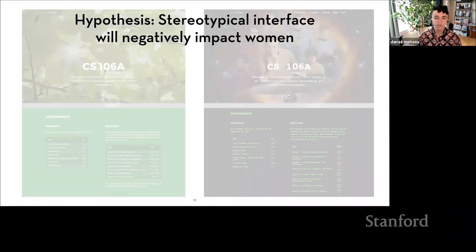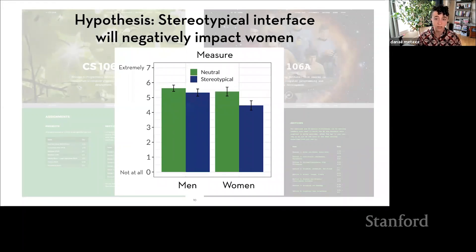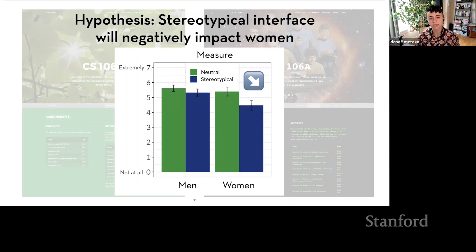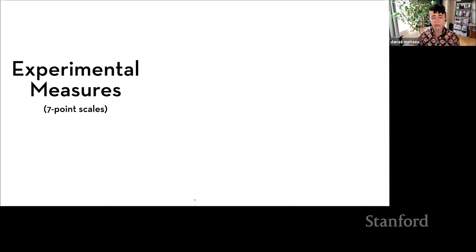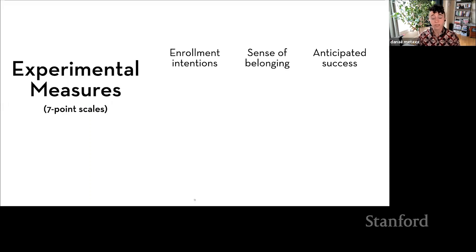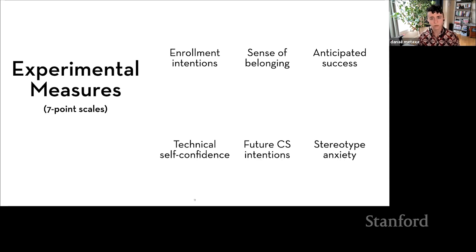Both interfaces were designed and pre-tested to look appealing and engaging to students — the content on the pages was identical; I only changed the aesthetic design. Comparing the neutral interface in the lighter color and the stereotypical in the darker color, I expected very little difference for men, but for women the stereotypical interface would have a negative impact. After interacting with one of those two websites assigned at random, participants answered questions on a seven-point Likert scale about intention to take the course, expected comfort, expected performance, confidence in technical abilities, interest in computer science, and whether they felt they would be judged according to gender stereotypes.